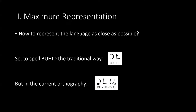For example, to spell the word 'Buhid' in the traditional way, you use the symbol for Ba with the diacritic below the base symbol to make it Bu, and then He with the diacritic on top for Hi — giving you Bu and Hi. But in the current orthography the community uses, there is a vowel killer: you add another basic CV shape for Da and then add a vowel killer, called Fanaktaba in Buhid, which removes the vowel of the basic shape, giving you the final D and thus spelling Buhid fully.